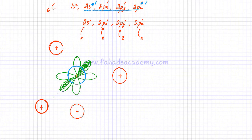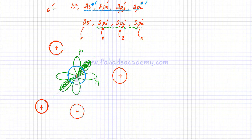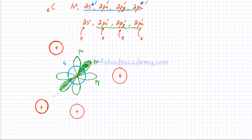I've drawn the 2P orbitals of carbon in green. One is the Px orbital, the other one is the Py orbital. Each orbital has one electron. The shaded green one is the Pz orbital — think of the z-axis as coming out of the page and going into the page. The blue orbital over here is the 2s orbital of the outer shell. So carbon has four orbitals, each with one electron in it.